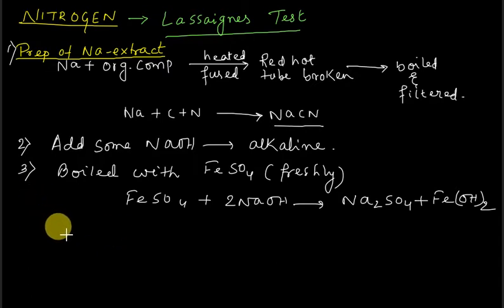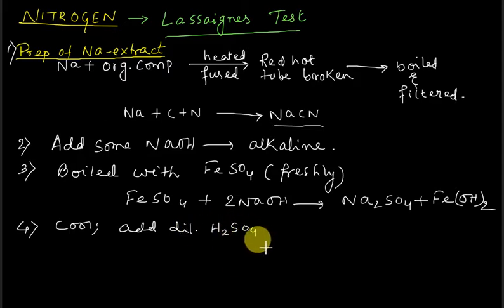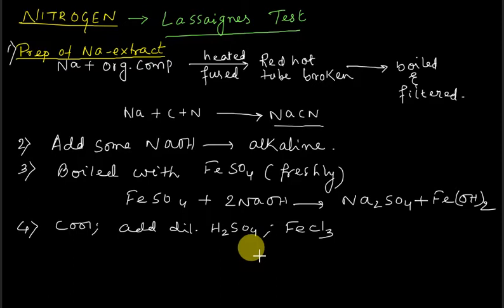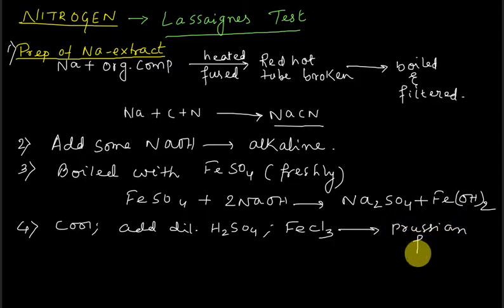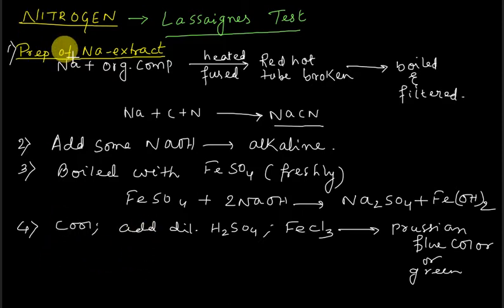The fourth step is to cool this solution. Then add dilute H2SO4 and FeCl3. This addition causes a Prussian blue color or green color, which confirms the presence of nitrogen in the compound.